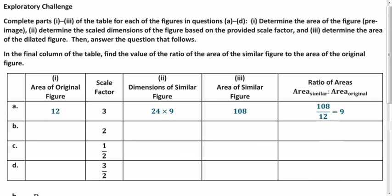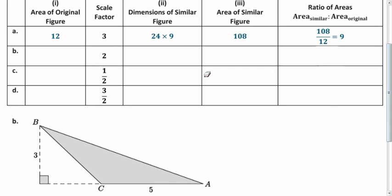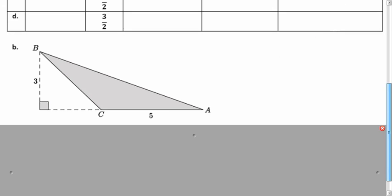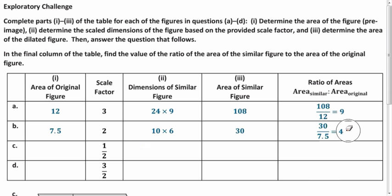I'd like you to try the same with this triangle. Fill in your chart, and I'll show you my solutions. Here is the area, 7.5. New dimensions are 10 and 6, and the new area is 30. That gives us a ratio of 4.